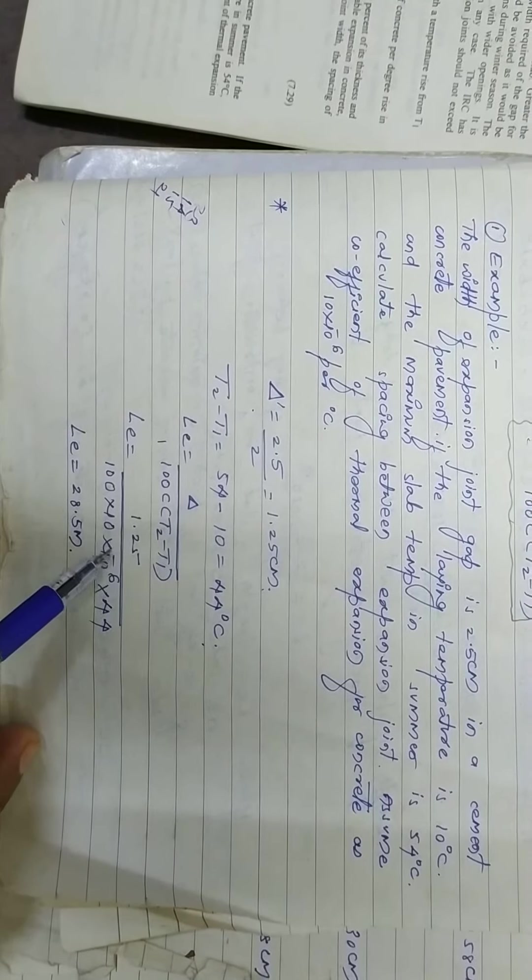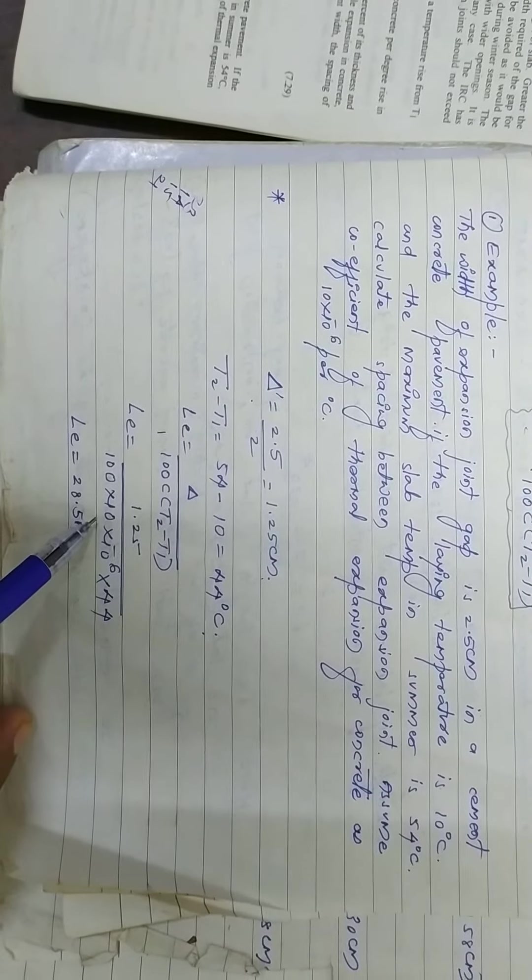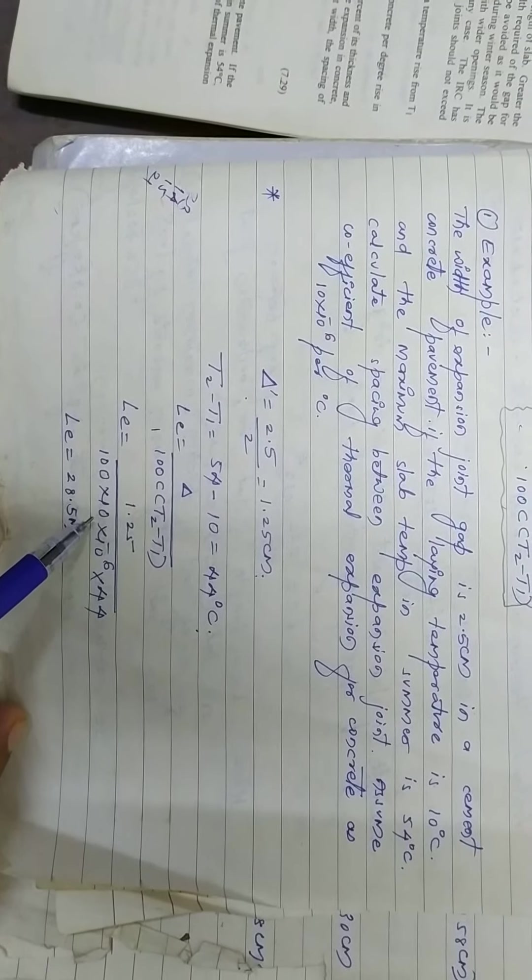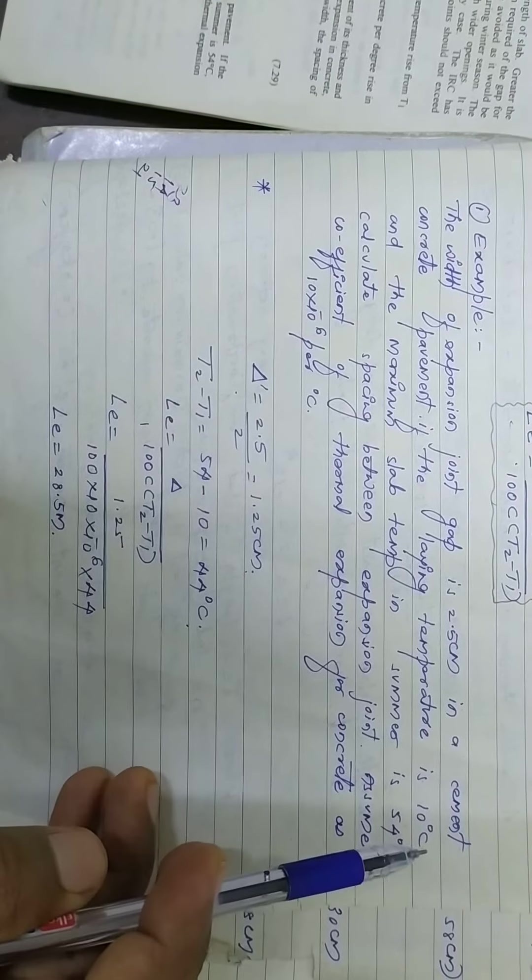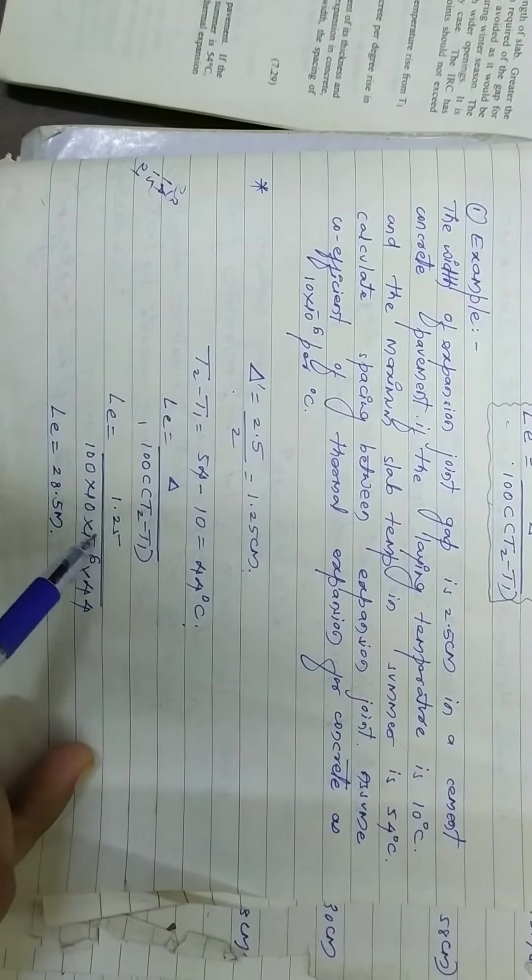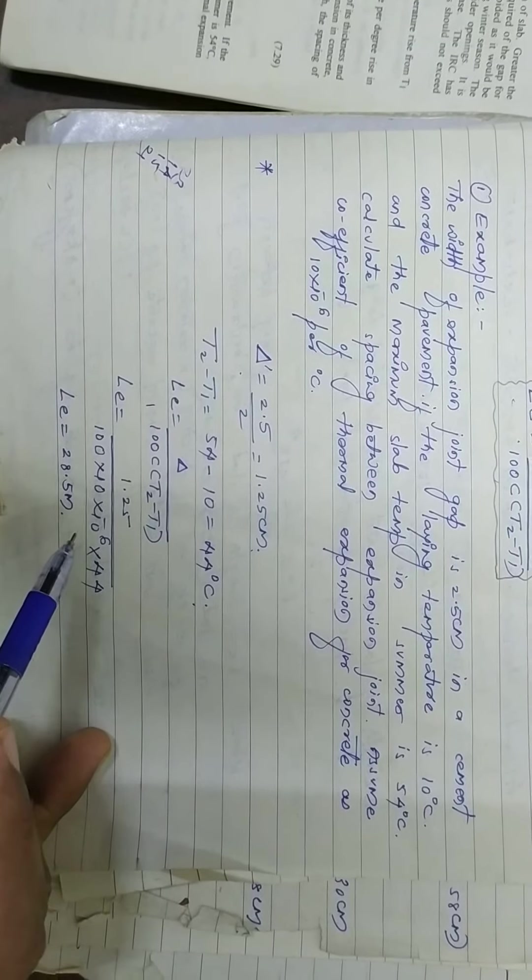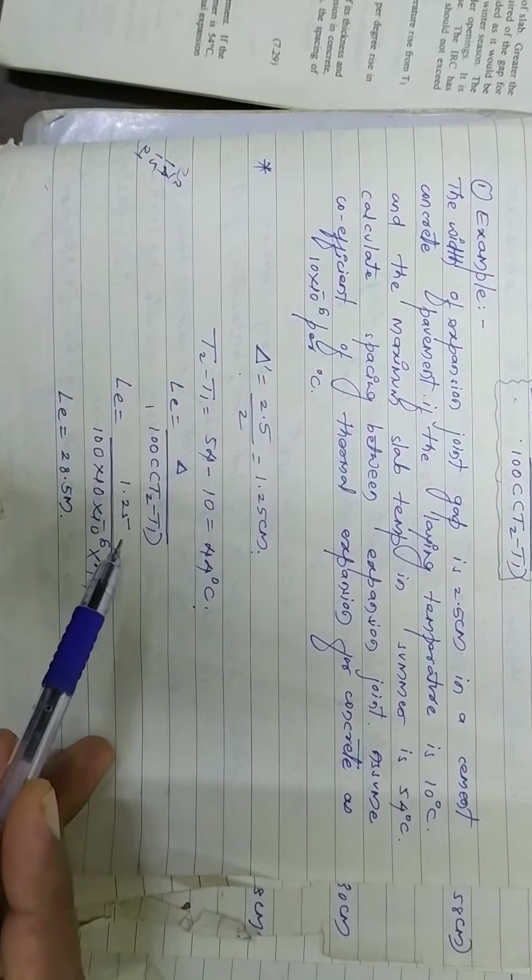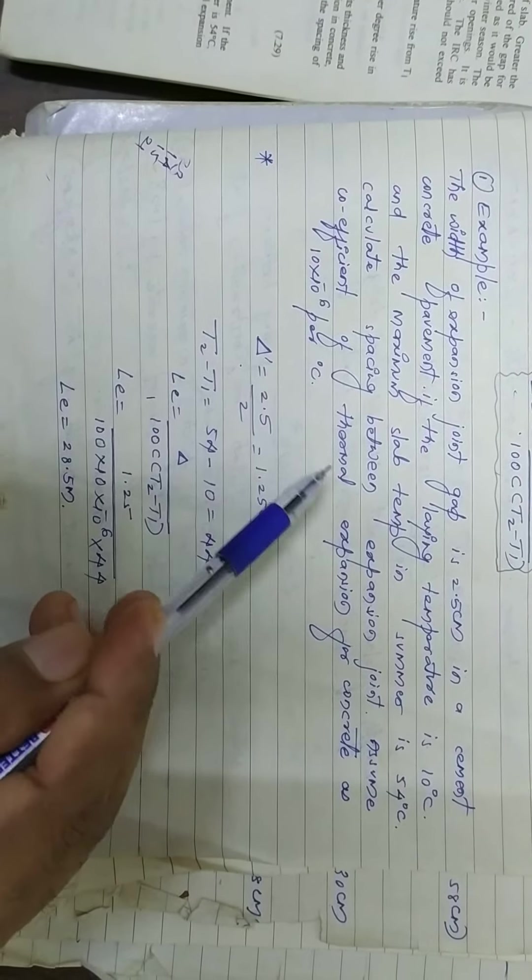Delta is 1.25, so we have to multiply by 100. C is 10 into 10 to the power of minus 6, and the temperature difference is 44, so you have to multiply by the thermal expansion.